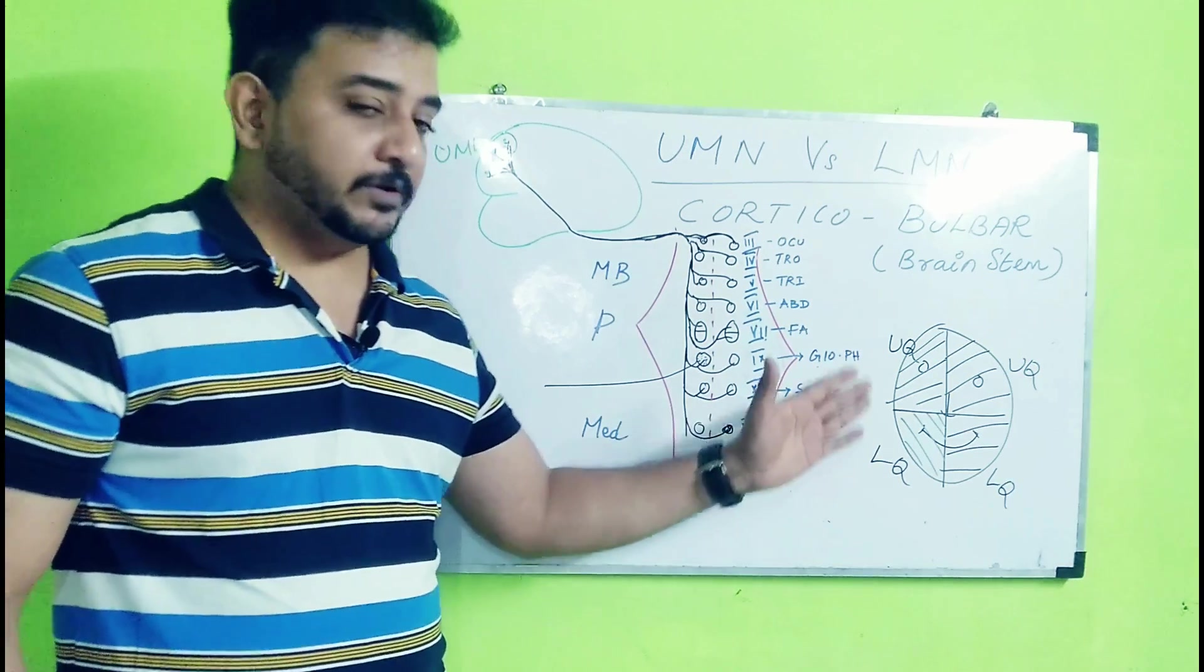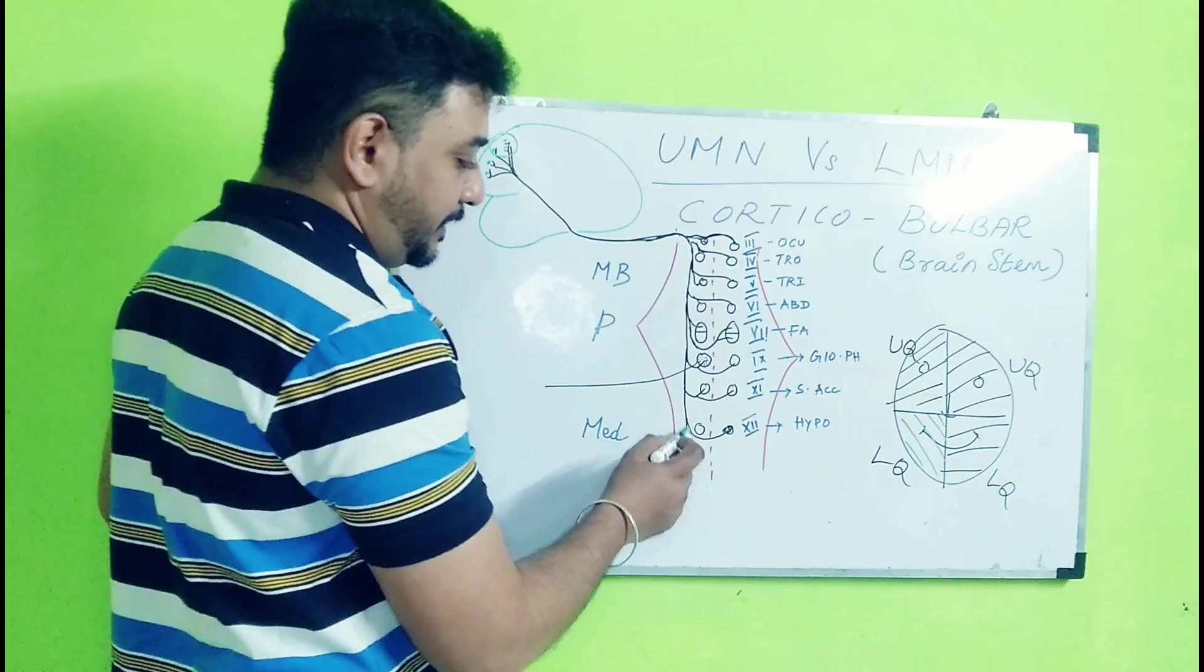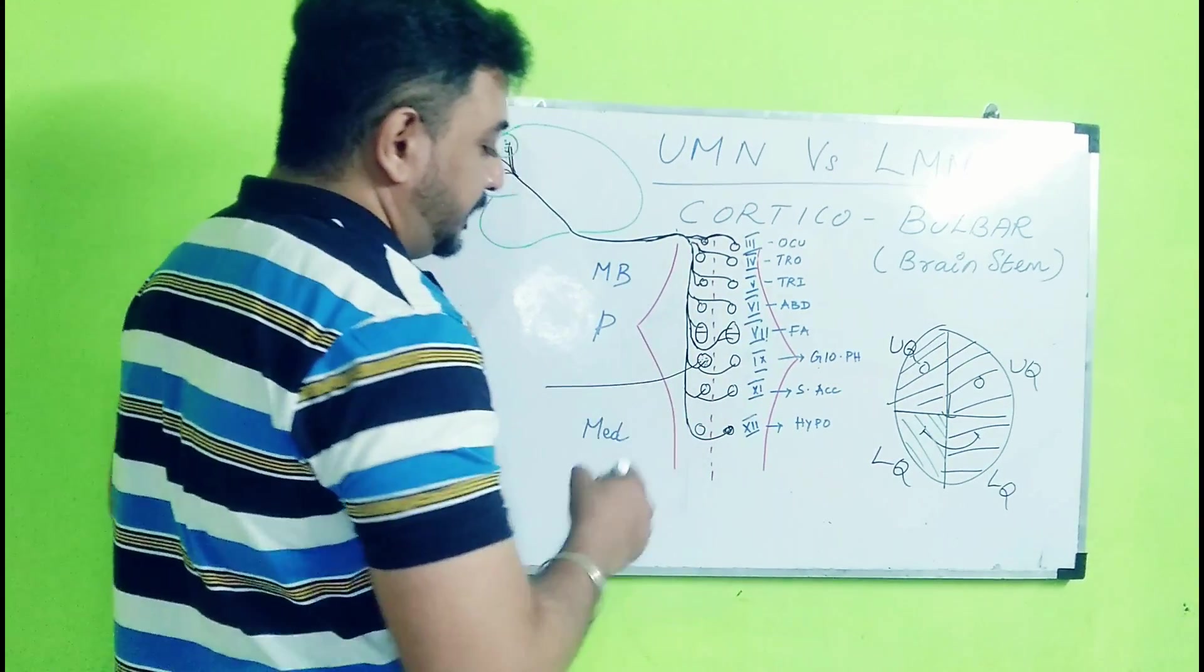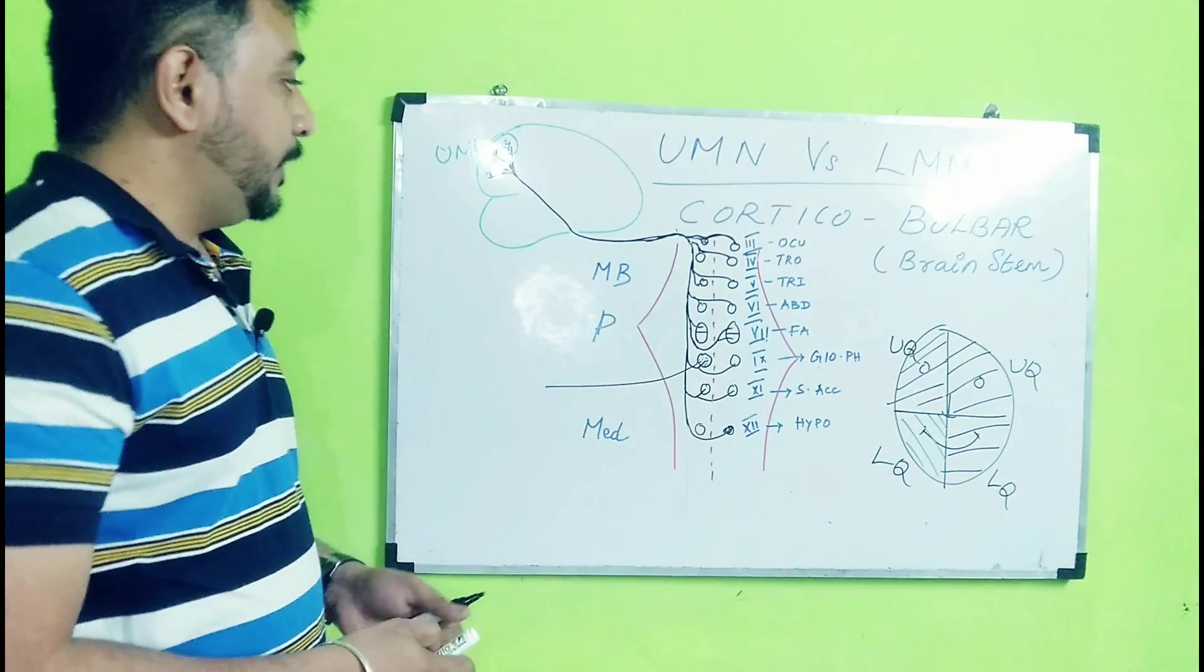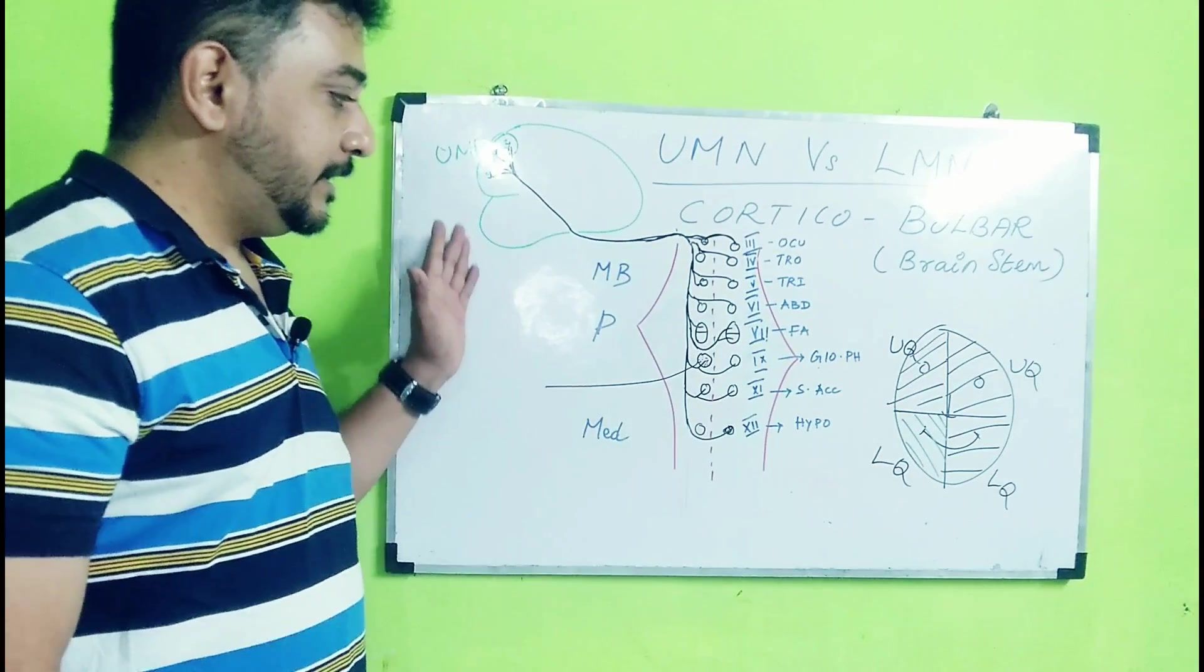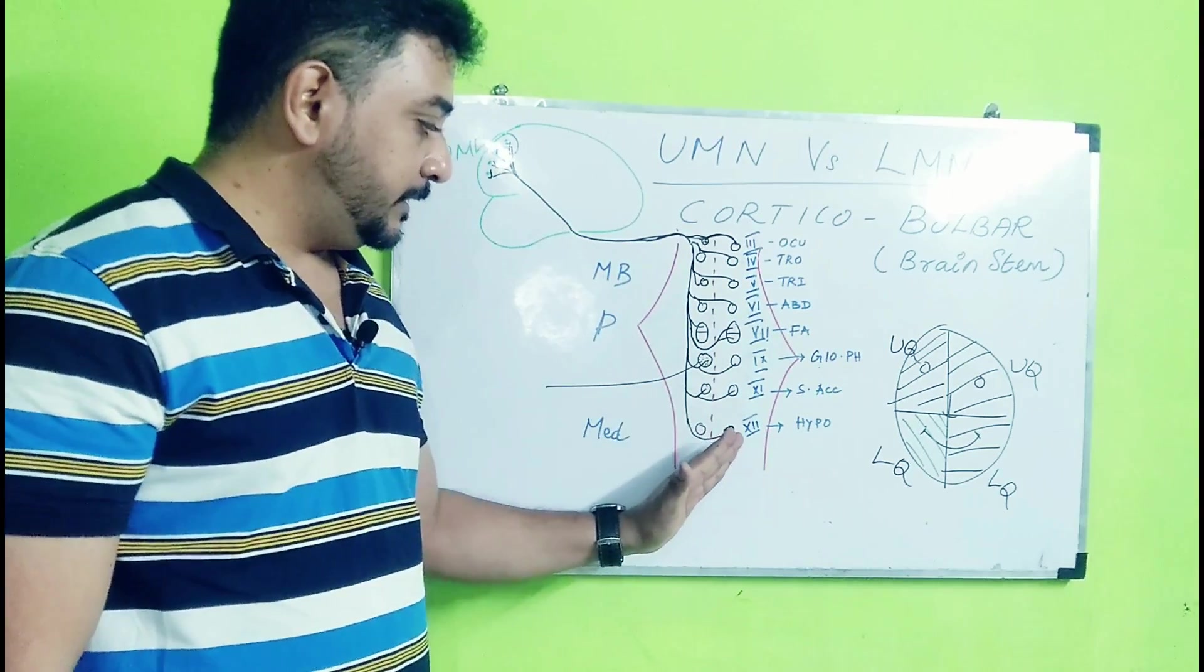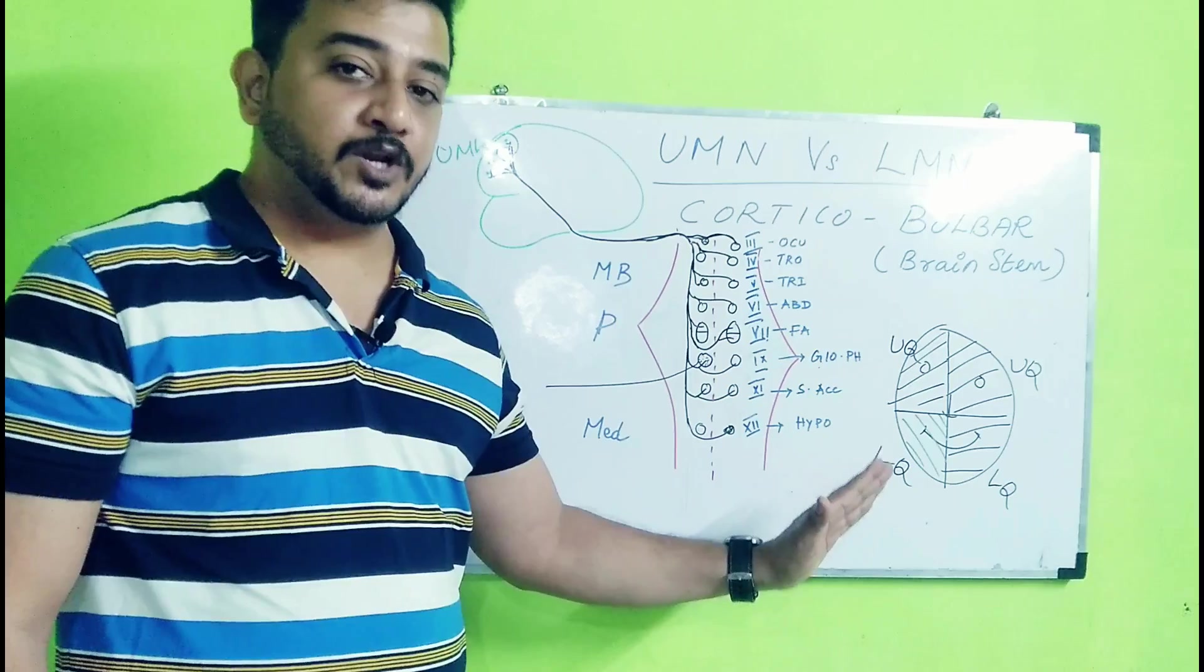We are coming up with that later on. So just as of now, remember this. Likewise, if you see all other cranial nerves are similar, but the hypoglossal nerve also does not innervate the ipsilateral side. It innervates only the contralateral side. So when the patient has a left-sided corticobulbar tract involvement, the opposite side hypoglossal functions will be lost.